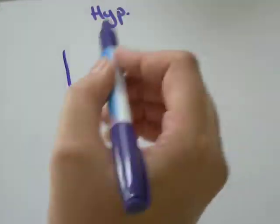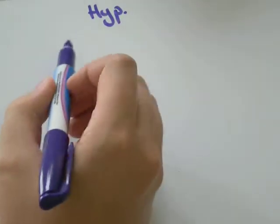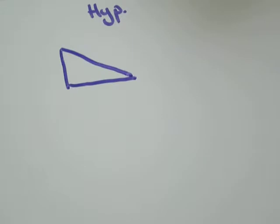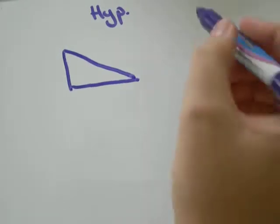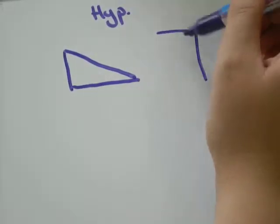So the important thing to know is that hypotenuses you're only going to see in triangles that have right angles. Something like that.